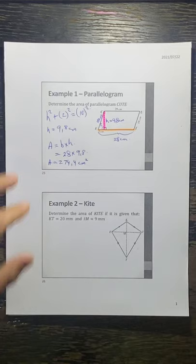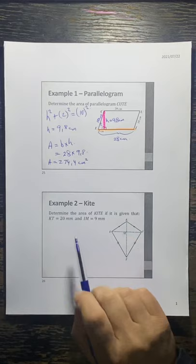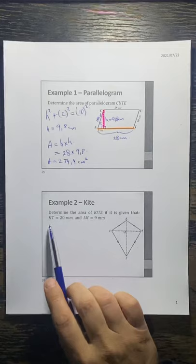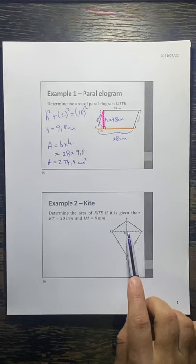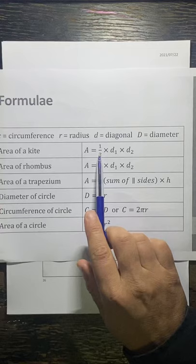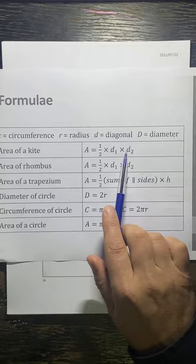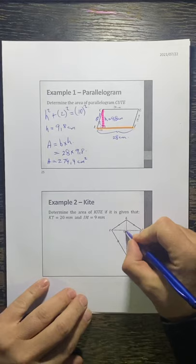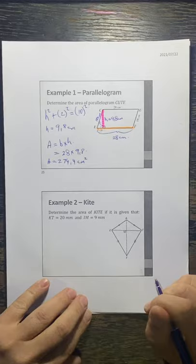Moving on to example two: determine the area of the kite KITE. It is given that KT — this whole length — is 20, and IM — this smaller length — is 9. The formula for the area of a kite is equal to half times D1 times D2, where D1 and D2 are the lengths of the two diagonals. We'll call the long diagonal KT as D1 and the smaller one D2.